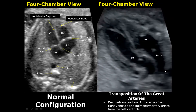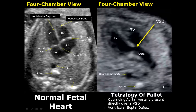Here is another image showing the parallel configuration. The aorta arises from the right ventricle and the pulmonary artery arises from the left ventricle.